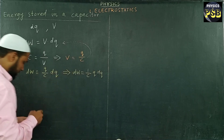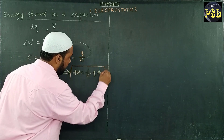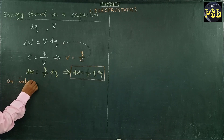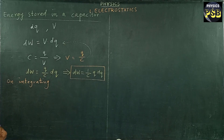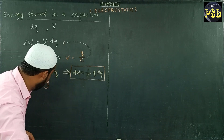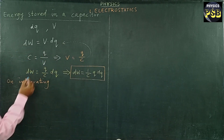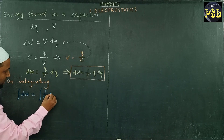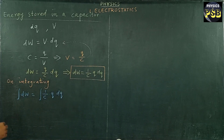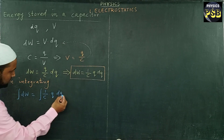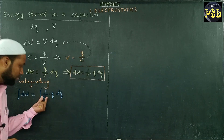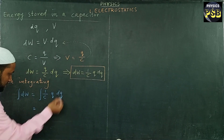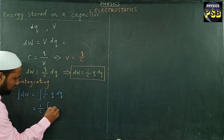I am going to integrate this equation. If I integrate this, we get the total work done. So: integral of dW equals integral of (1/C)·q·dq. Here, 1/C is a constant, so we do not integrate a constant — it is brought outside: (1/C)·integral of q·dq.